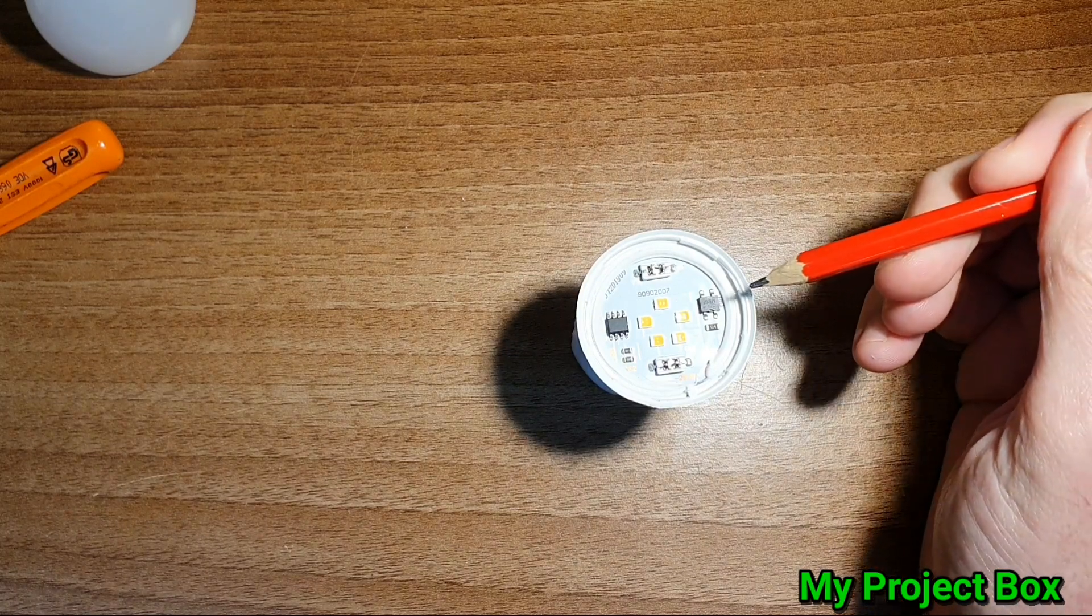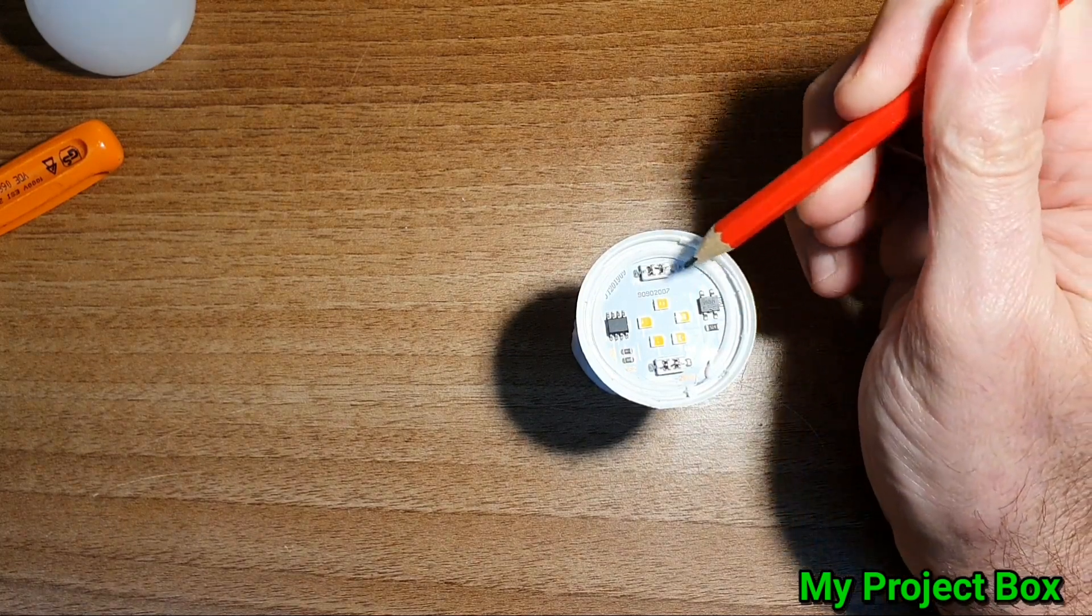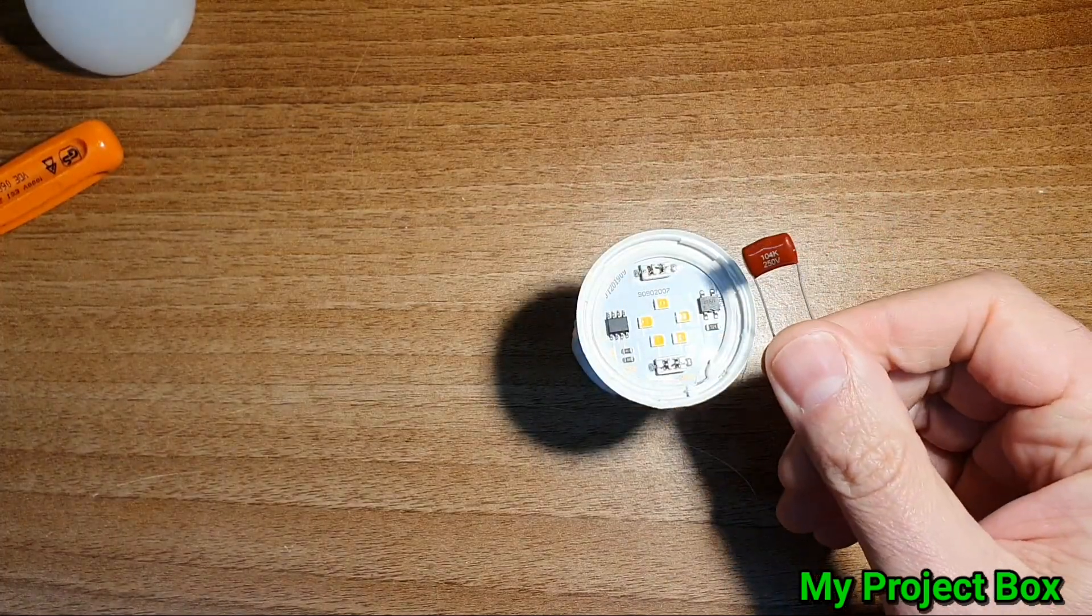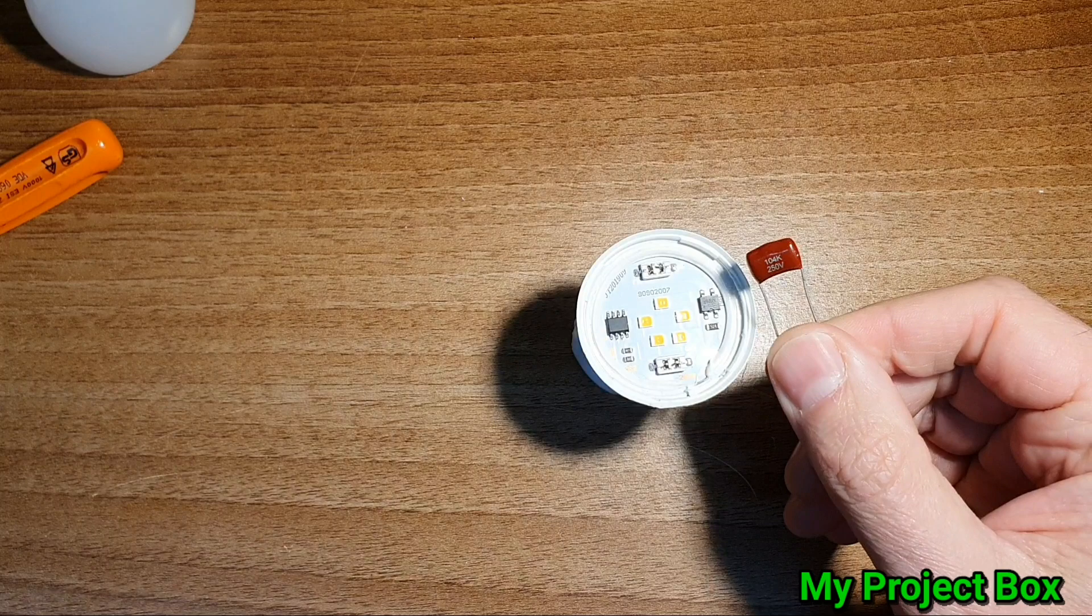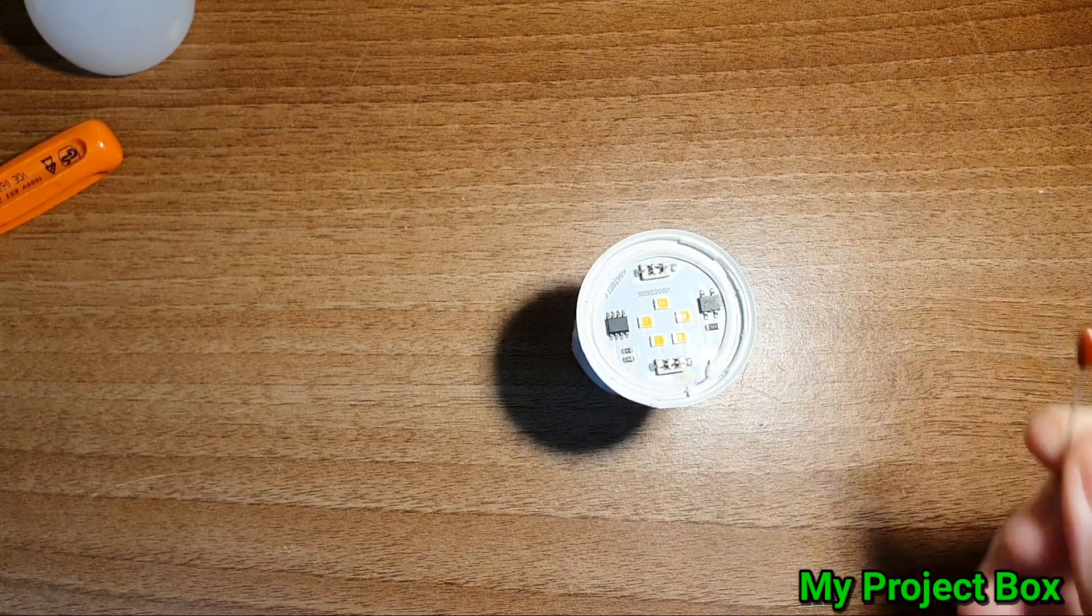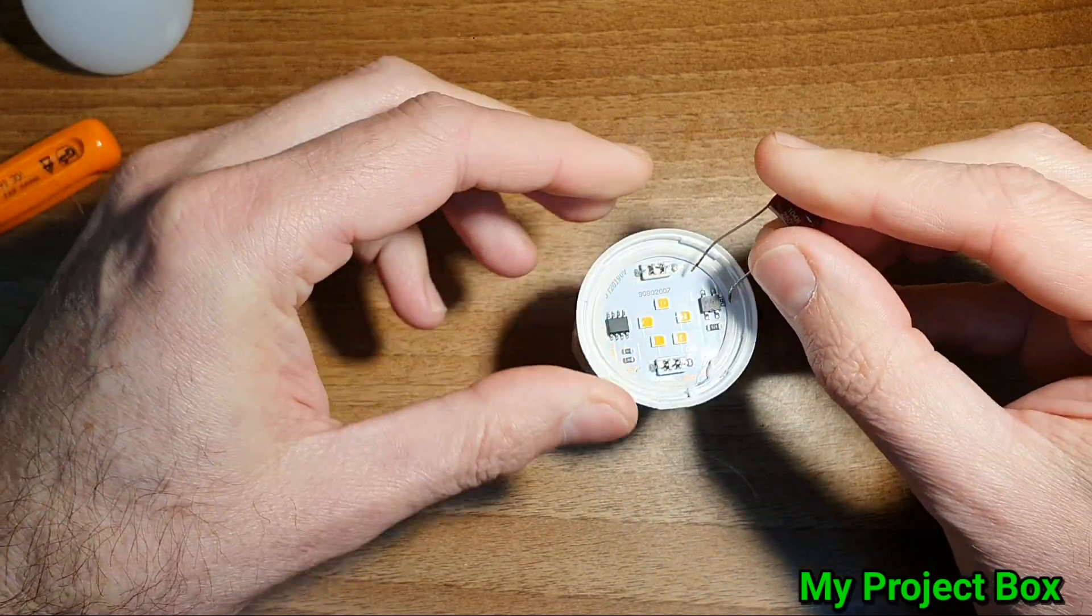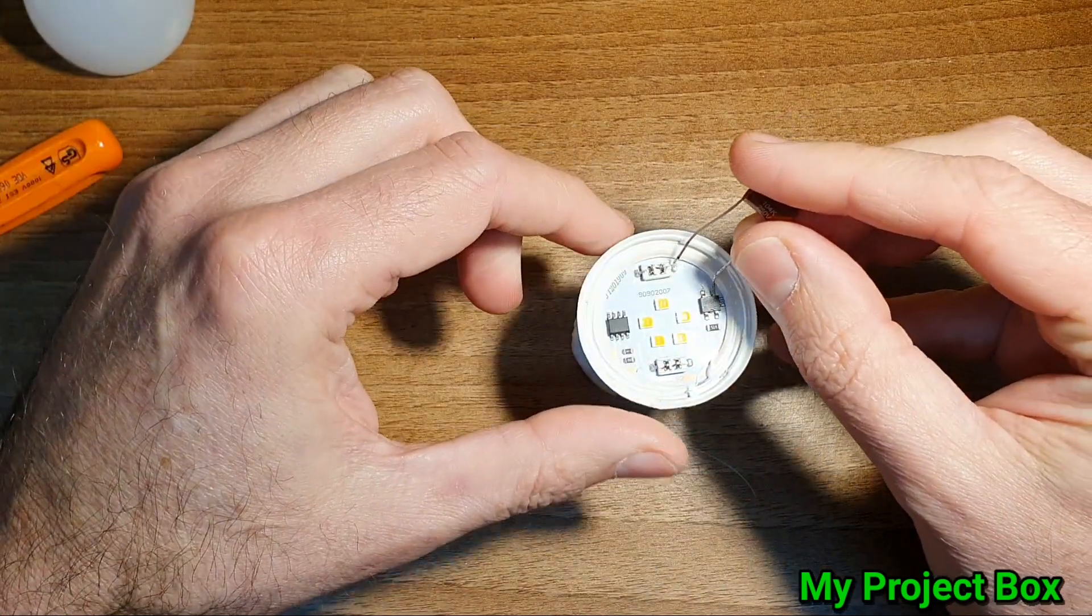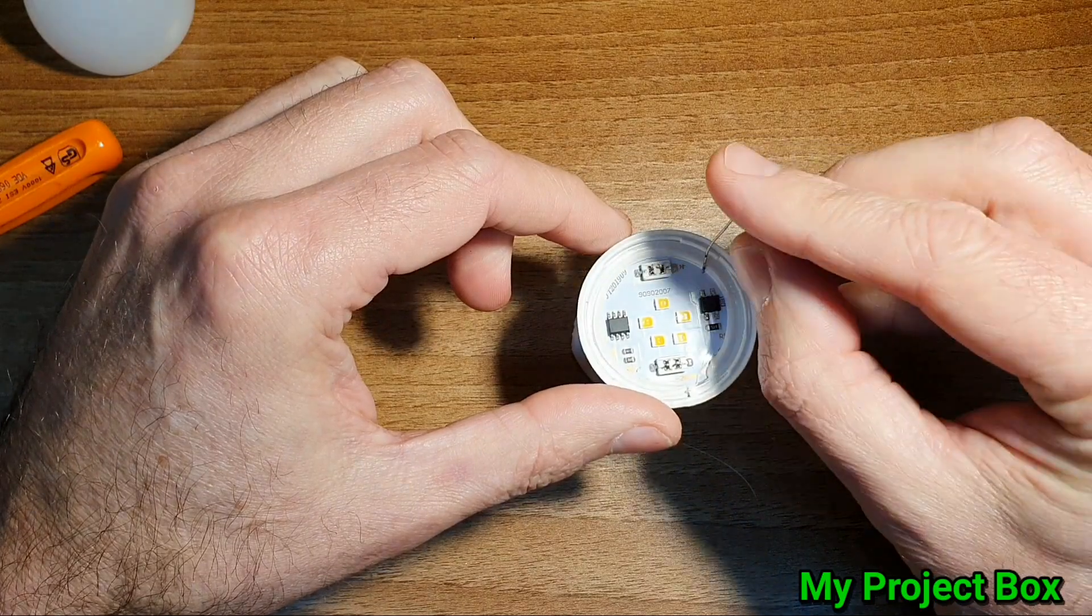What we're gonna do is just before the bridge rectifier we're gonna put a capacitor in line with one of the AC lines. Looks like the neutral will be the easiest one to do. So we're gonna put it between there and there, the one input of the bridge rectifier. We're gonna break that connection there.